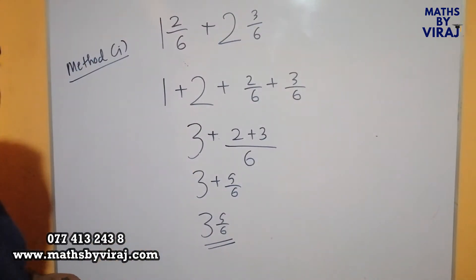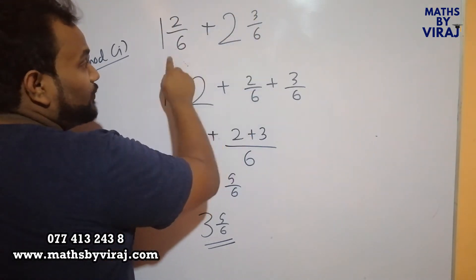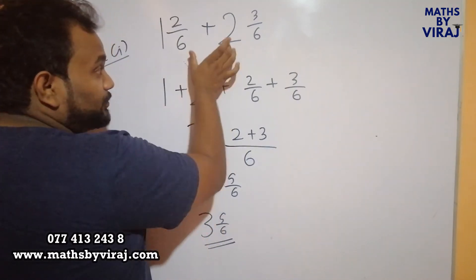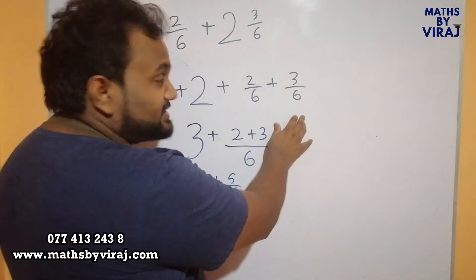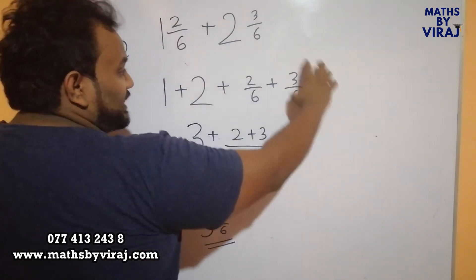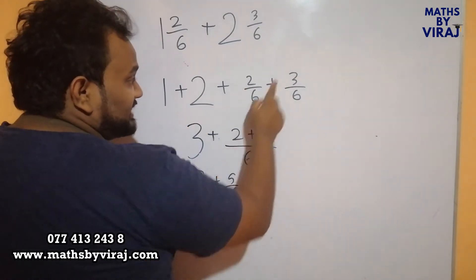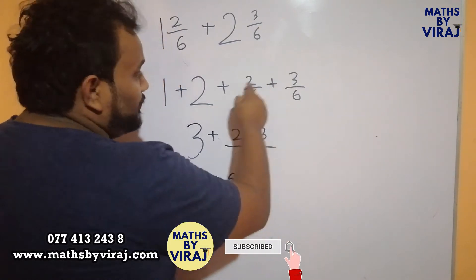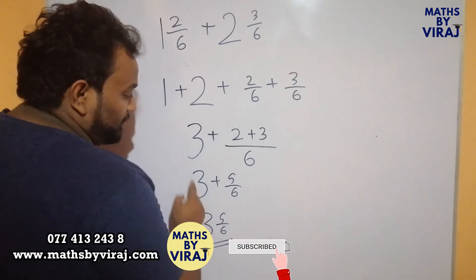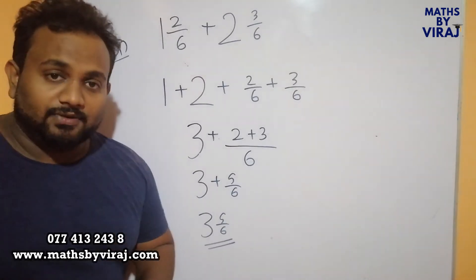So the whole number is 3 and 5 over 6. When it is 1 and 2 over 6 plus 2 and 3 over 6, we add the two whole numbers first: 1 plus 2. To that you add the two proper fractions, which is 2 over 6 plus 3 over 6. Since the denominators are the same, we just simply add the numerators.